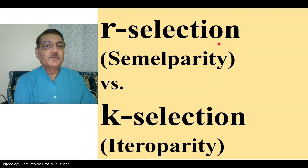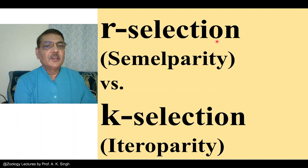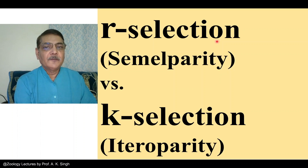Out of these four major factors, if we consider selection, then this aspect is talked about in various ways. Here I am going to talk about R selection, which is also known as semelparity, and the other one is K selection, that is iteroparity.